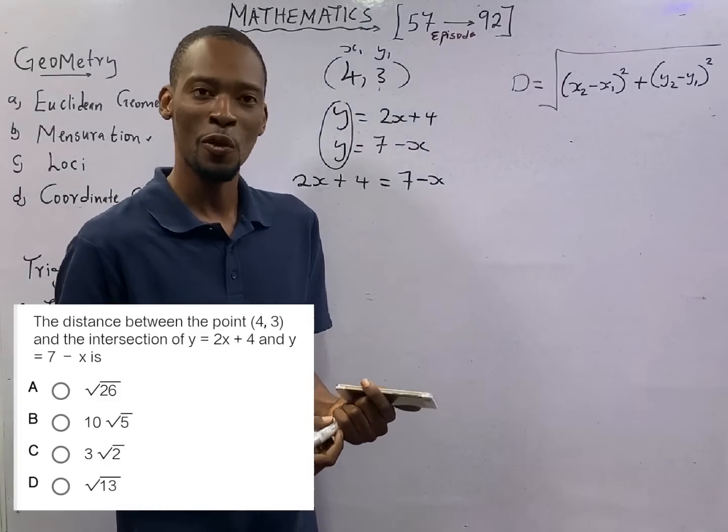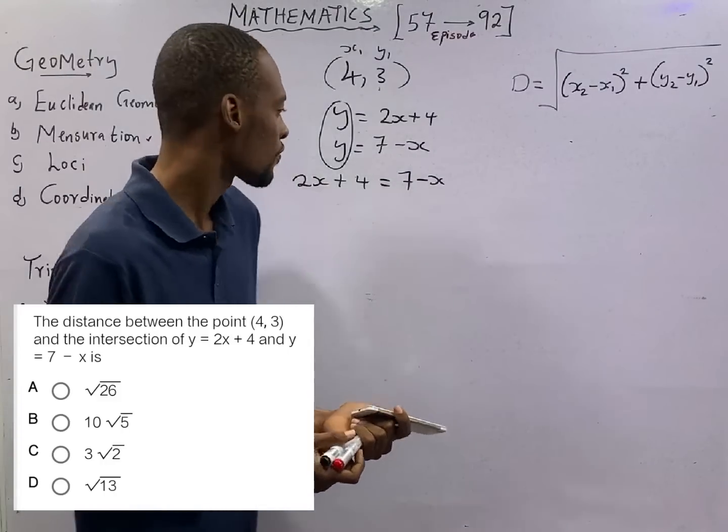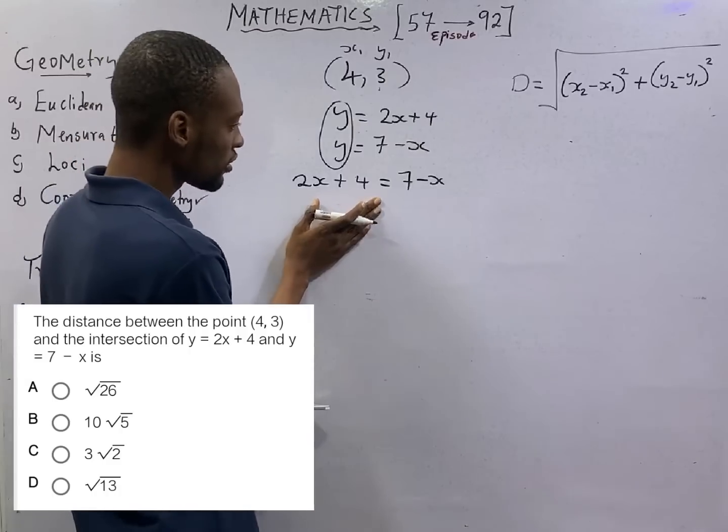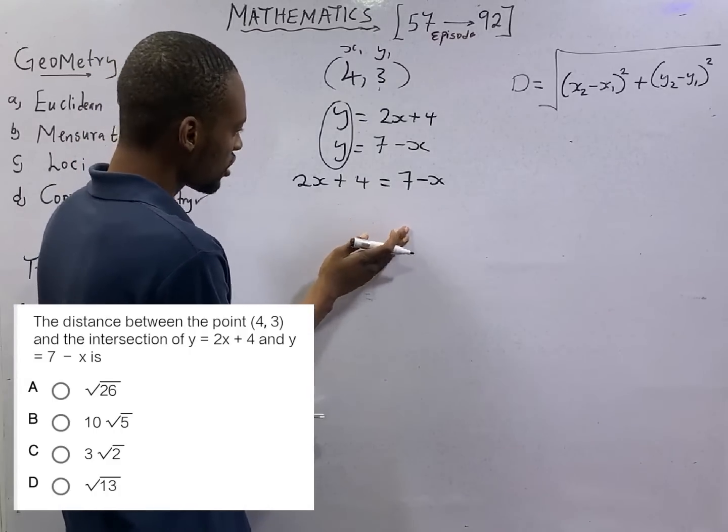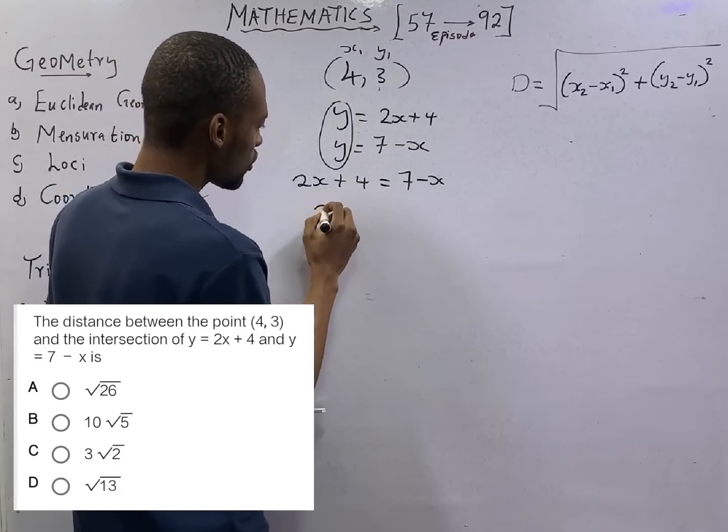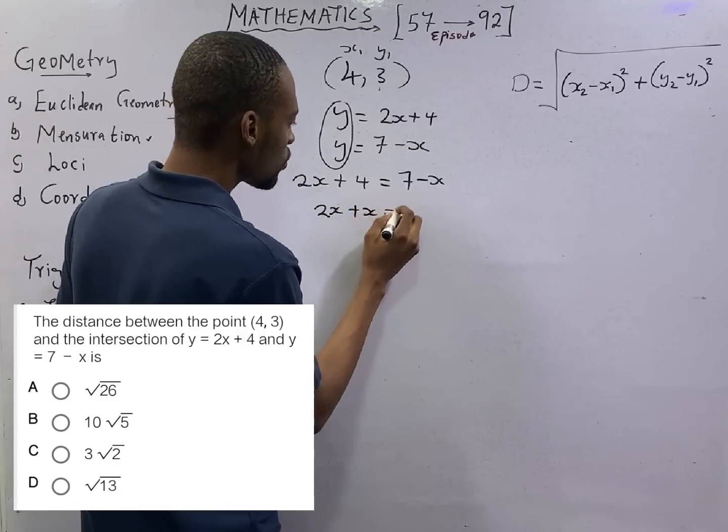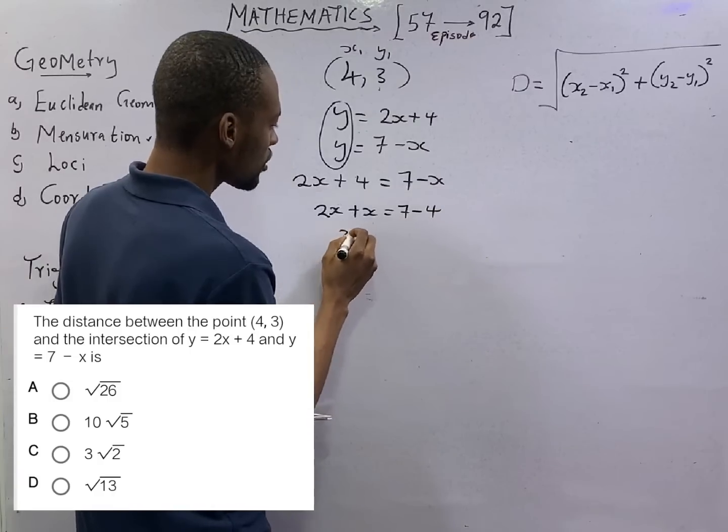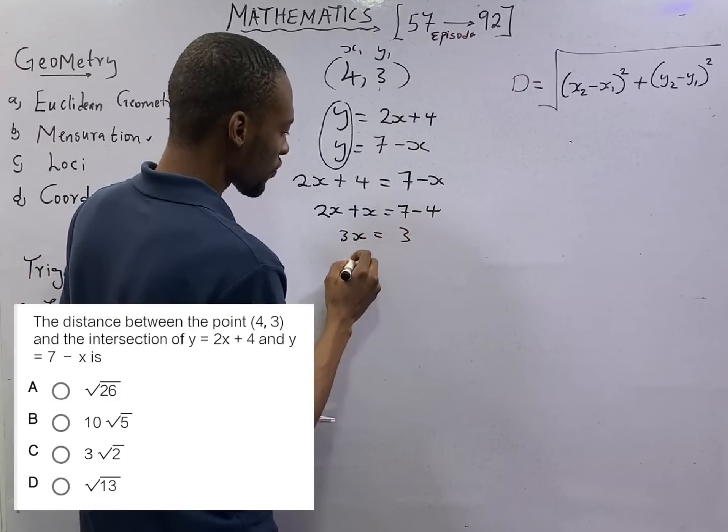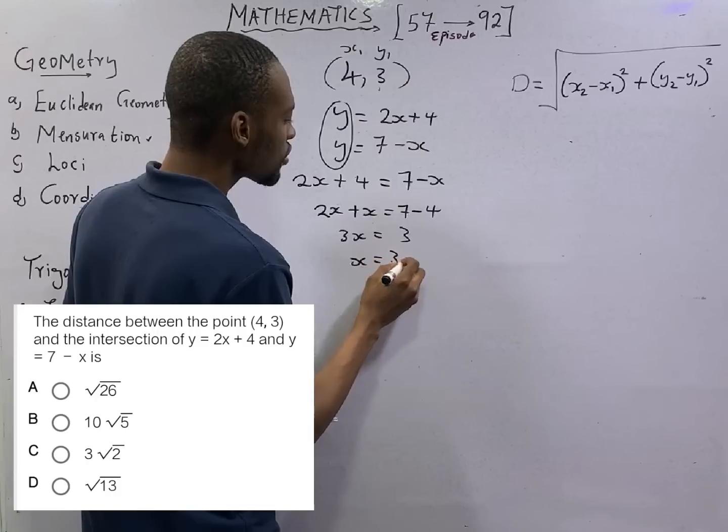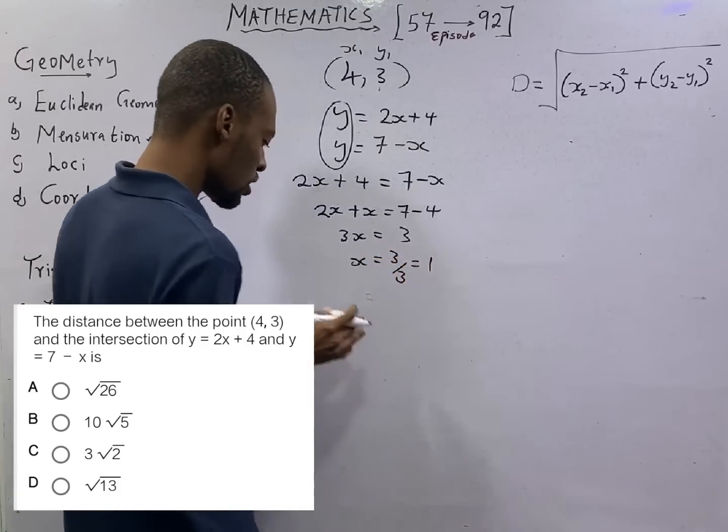From here, if you collect like terms, you should have 2x plus x equals 7 minus 4. 3x equals 3, x equals 3 over 3. That equals 1.